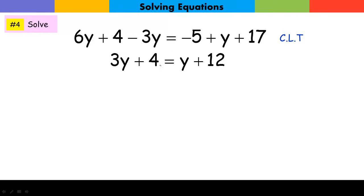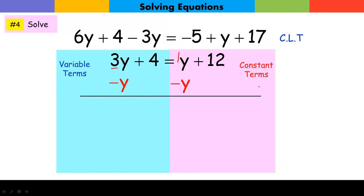Once I get it down to here, now I'm going to pick my side. I'm going to pick this side as my variable side because 3 is larger than 1. Subtract y from both sides. So I got rid of the variable term off the constant side. Now I want to get the constant off the variable side, so I subtract 4 from both sides. Divide by 2 gives me my answer of y equals 4.